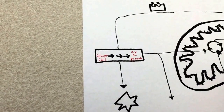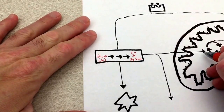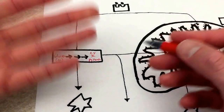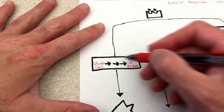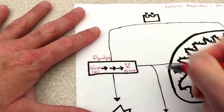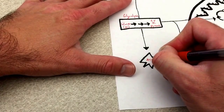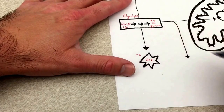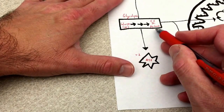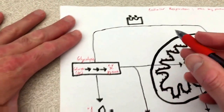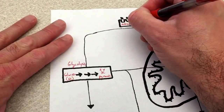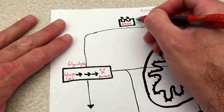Pyruvate has to be modified before it can go into the citric acid cycle in the matrix — it has to get molecularly modified. This is glycolysis, and we produce a little ATP, about two ATP, per glycolysis reaction that occurs.